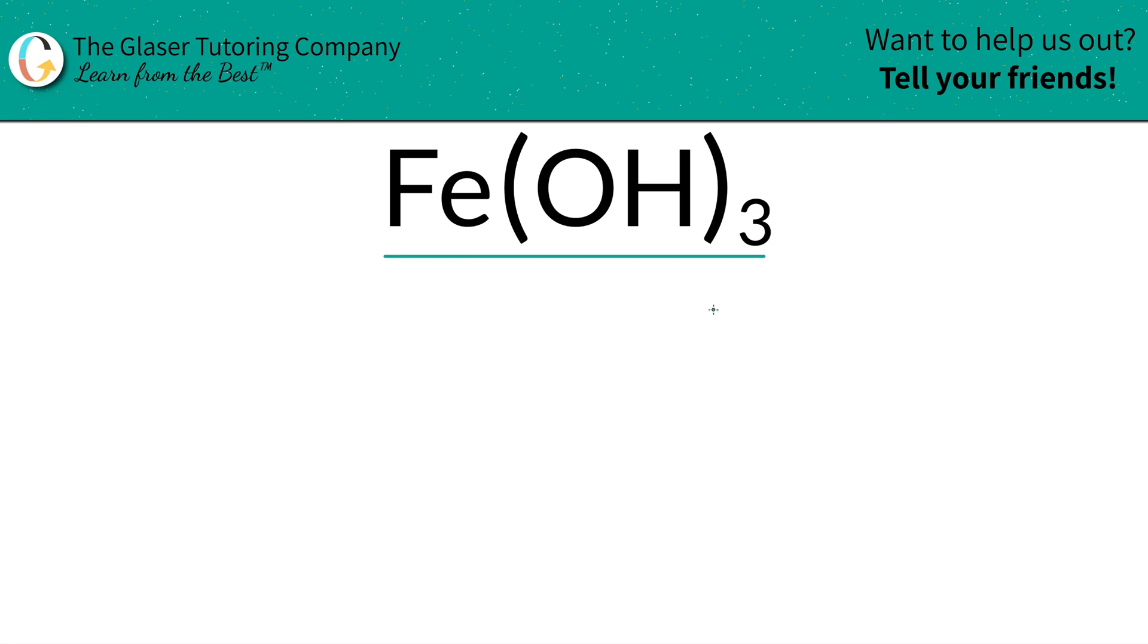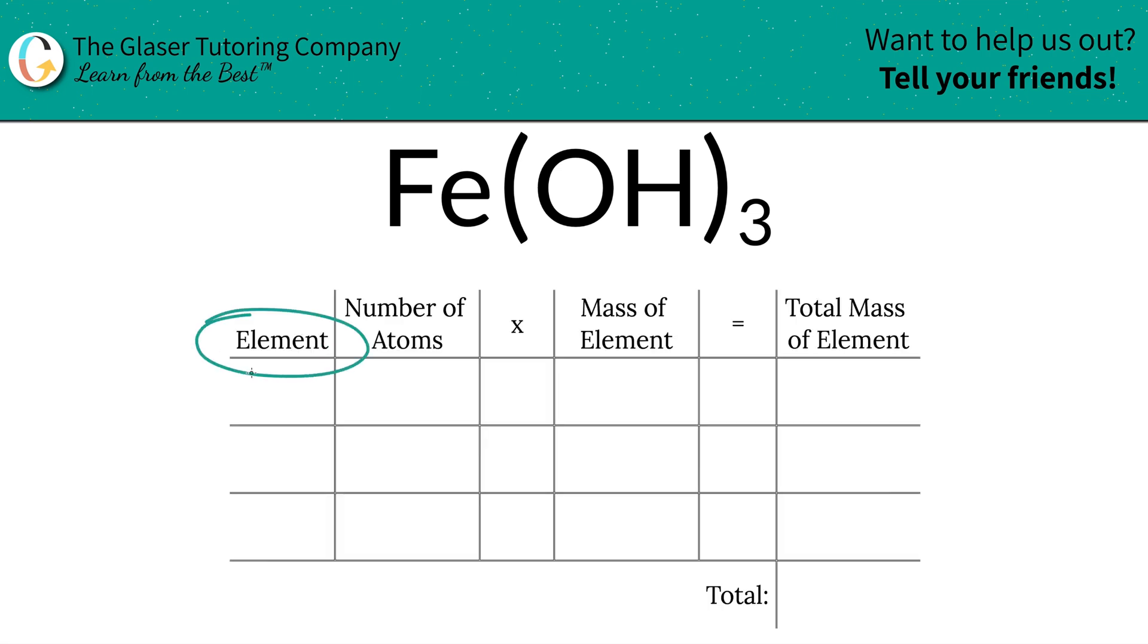It's easy peasy. Watch how quick this is! So the first thing we're going to do is write down the elements that we see in the compound: we see iron, we see oxygen, and we see hydrogen.